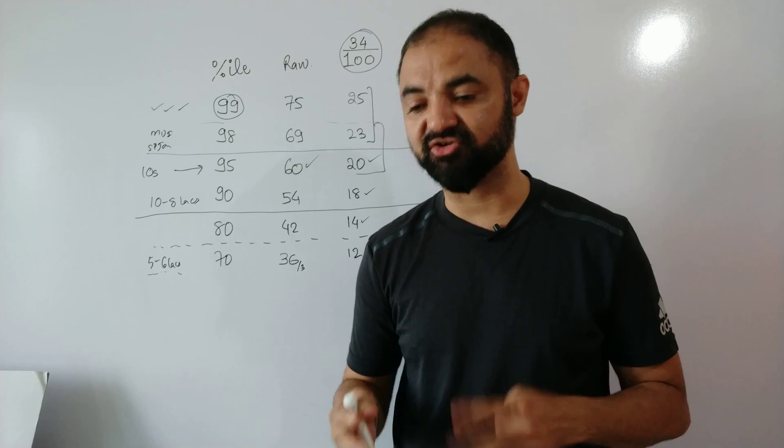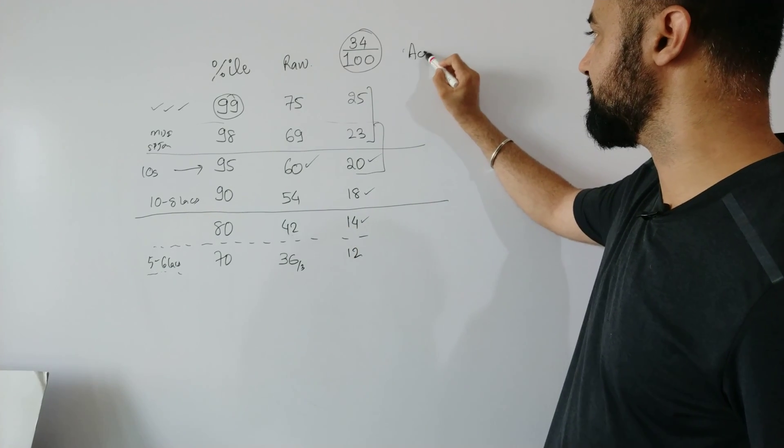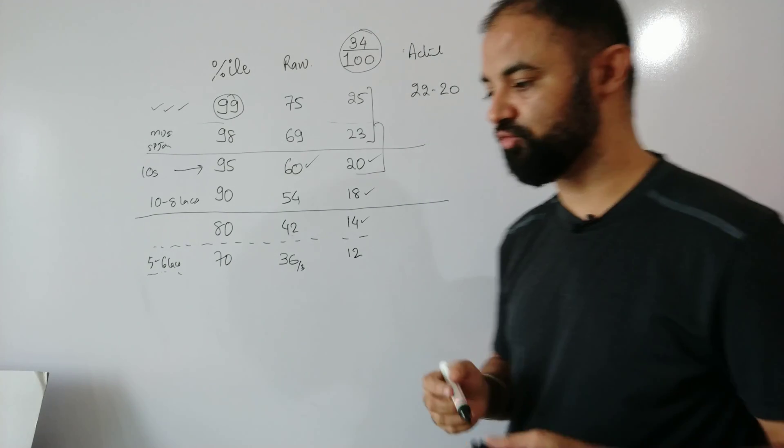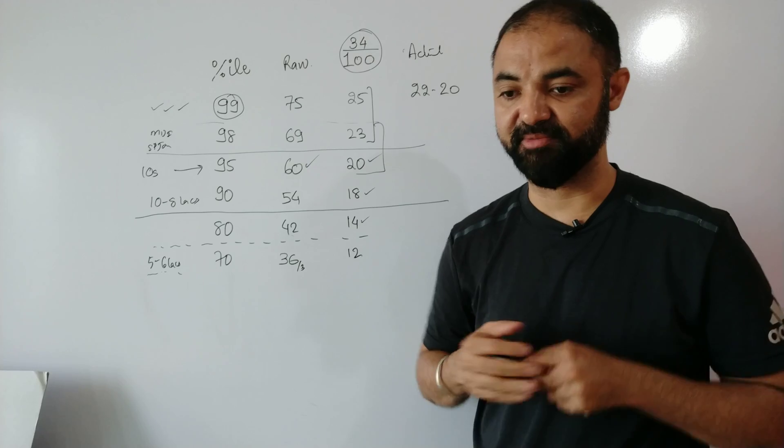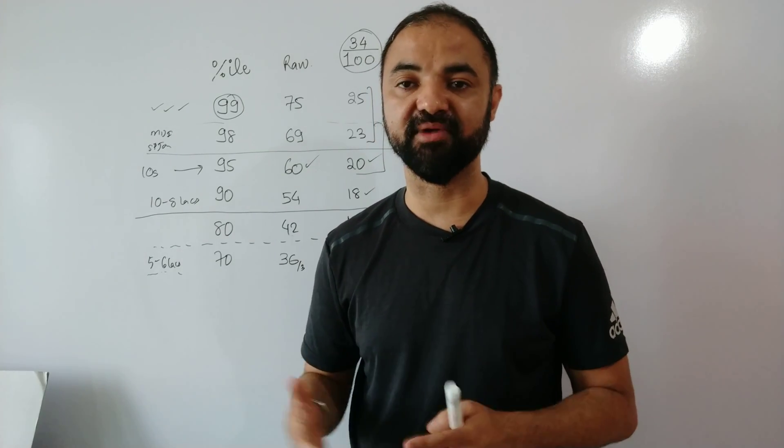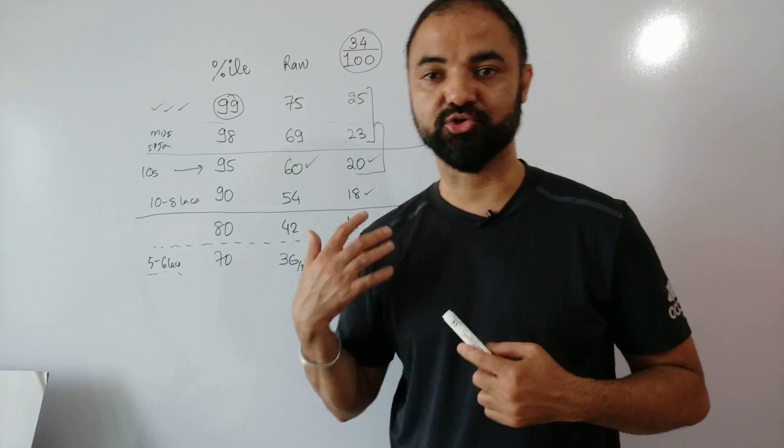Now on the basis of my experience with the CAT paper, I consider the actual cutoff will be around 20 to 23 marks for 99 percentile. Because verbal section main problem is the negative marking. If you factor in negative marking, your scores are definitely going to go down. So 20-22 will be the thing.